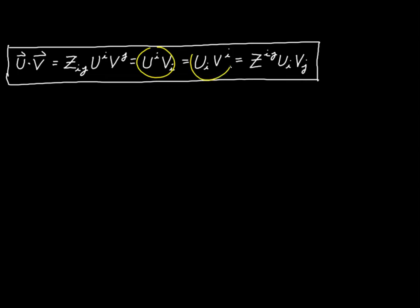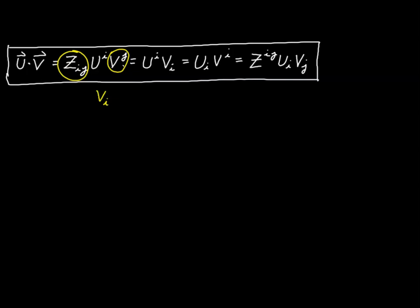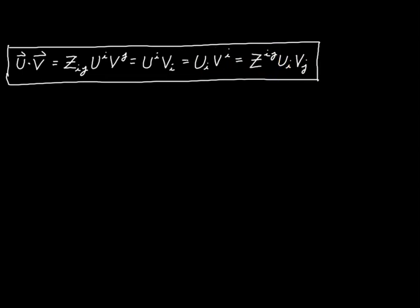These two forms — u^i v_i and u_i v^i — are interchangeable: we can lower one dummy index and raise the other simultaneously to get an equivalent expression. For the form with the metric tensor, combining z_ij with v^j is exactly what you'd use to lower the v index to v_i. Likewise, z^ij combined with v_j is what you'd use to raise the v index. So these really are the same thing — just different varieties of the same expression.